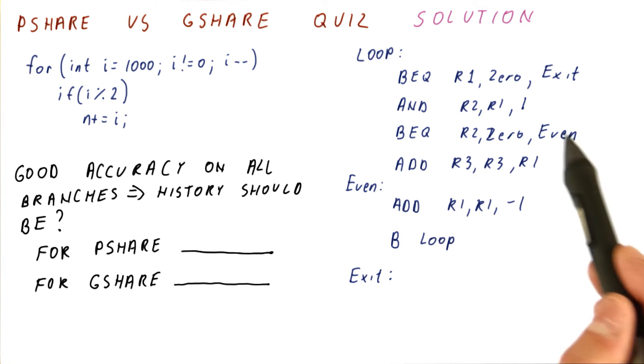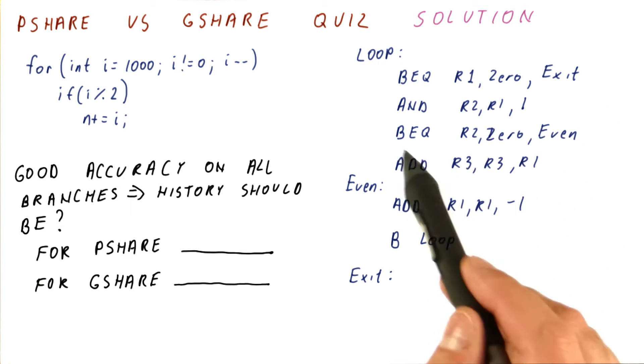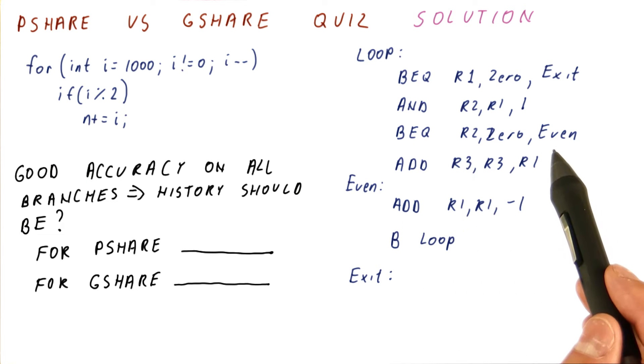This branch, however, requires some history. This is the even-odd branch, so we really need to know whether the previous outcome was even or odd so that we can do the opposite.